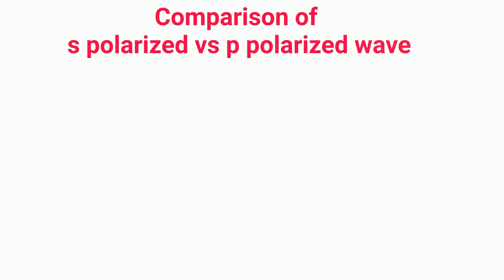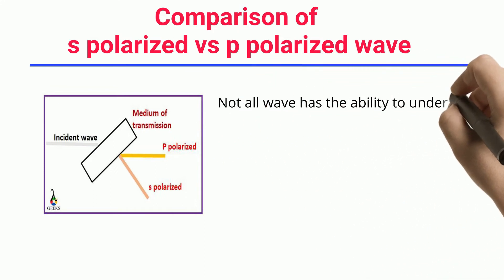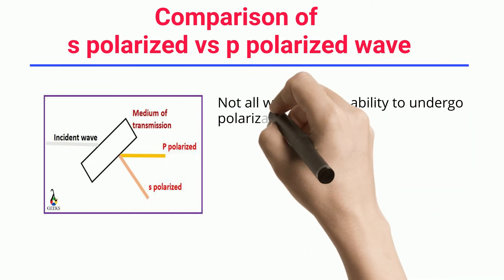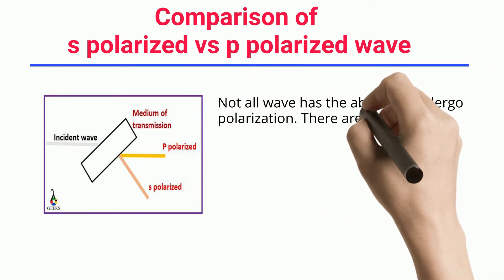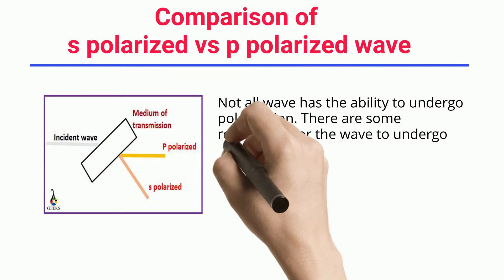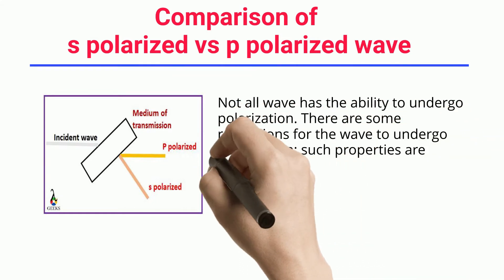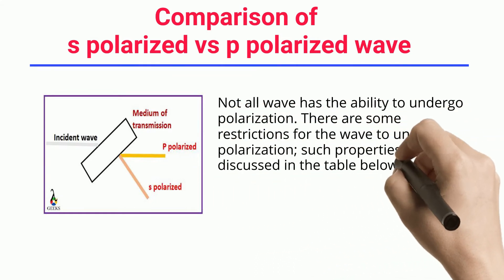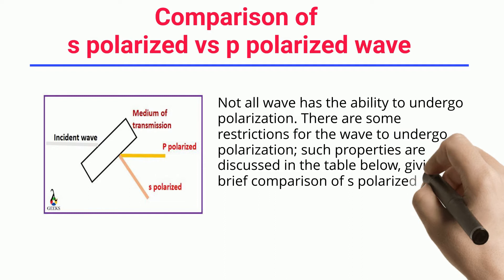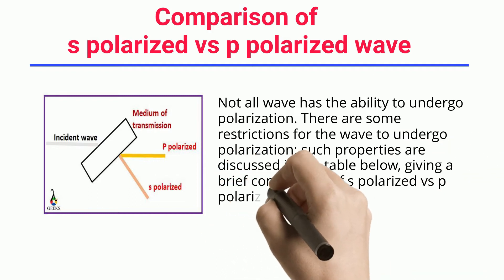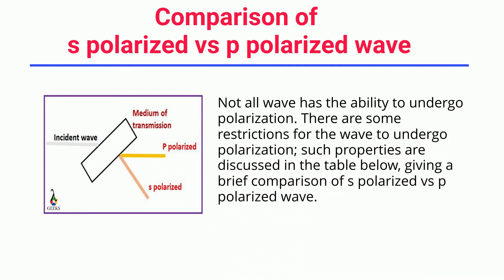Comparison of S-Polarized versus P-Polarized Wave. Not all waves have the ability to undergo polarization. There are some restrictions for a wave to undergo polarization. Such properties are discussed in the table below, giving a brief comparison of S-Polarized versus P-Polarized Wave.